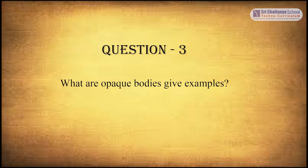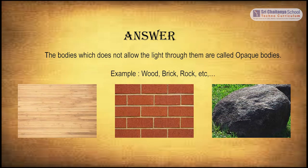The third question is: what are opaque bodies? Give examples. The answer is: the bodies which do not allow light to pass through them are called opaque bodies. For example, brick, rock, and so on.